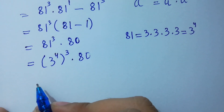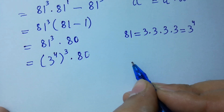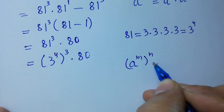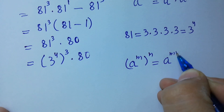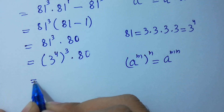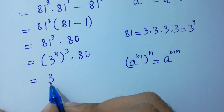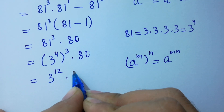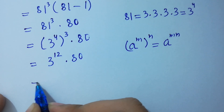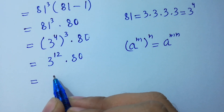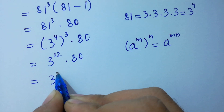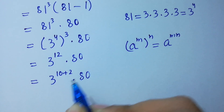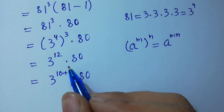Since a to the power m, to the whole power n, equals a to the power m times n, we have 3 to the power 4 times 3 equals 3 to the power 12, times 80. This is the same as 3 to the power 10 plus 2, times 80, because 10 plus 2 equals 12.